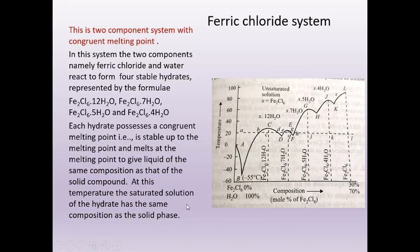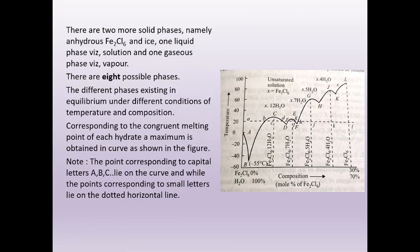Apart from the four stable hydrates, there are two more solid phases: anhydrous ferric chloride and ice. There is also one liquid phase and one gaseous phase. Overall, we have eight possible phases for the ferric chloride-water system: FeCl₃·12H₂O, FeCl₃·7H₂O, FeCl₃·5H₂O, FeCl₃·4H₂O, anhydrous ferric chloride, ice, liquid phase, and gaseous phase.